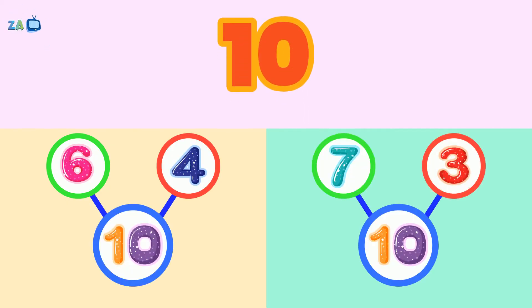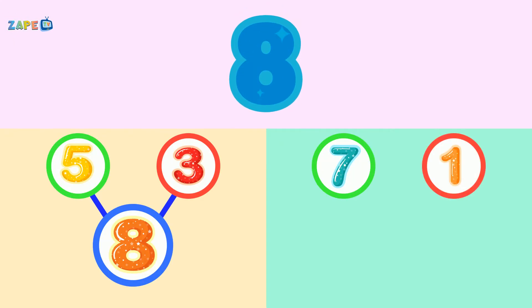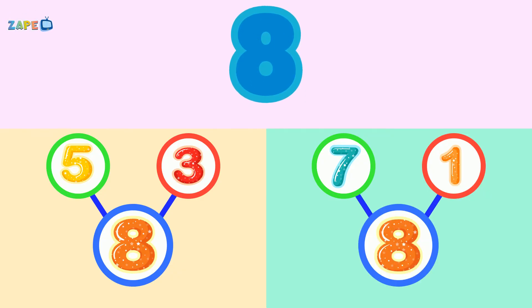Let's take eight, it's a fun number. Add five and three, now you've got it, no blunder! Or seven and one, they fit just fine. Number bonds are easy and now you're on time.